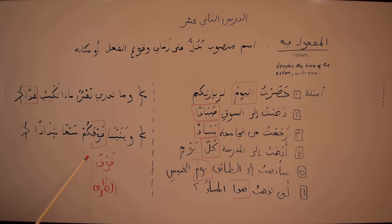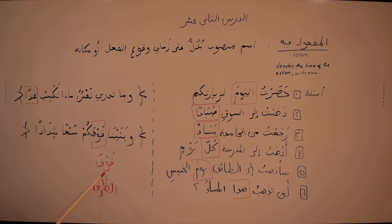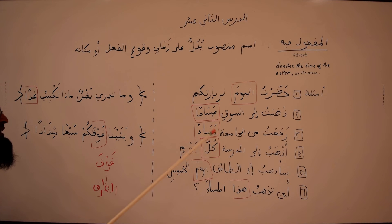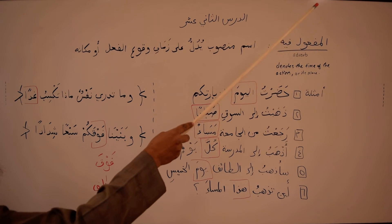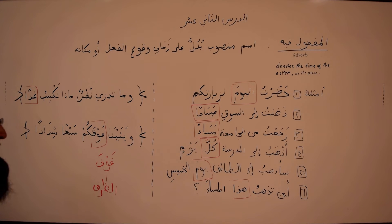You might have seen other dhuroof as well, like اليوم. What you will learn inshallah is that many of the مفعول فيه happen to also be a dharf. There are many sentences where the grammarian will not say المفعول فيه but may just say ظرف مكان or ظرف زمان — but it is also the مفعول فيه. So sometimes the names are interchangeable. We will go into more details later inshallah.